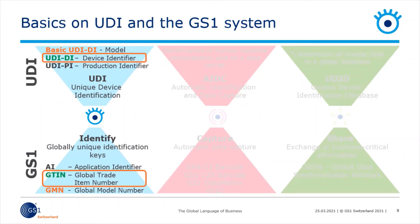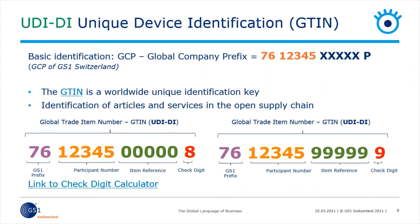In the next few slides, I will talk about the UDI-DI. The UDI-DI, as UDI Device Identifier, is what it's called. In the GS1 system, we call this identification key GTIN. The Global Trade Item Number is used for the worldwide unique identification of products and services in the open supply chain. The GTIN is 13 digits long and has a numeric character. The GTIN is created from the GCP, the Global Company Prefix.